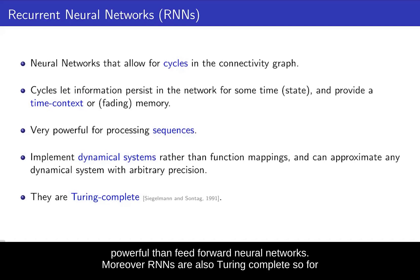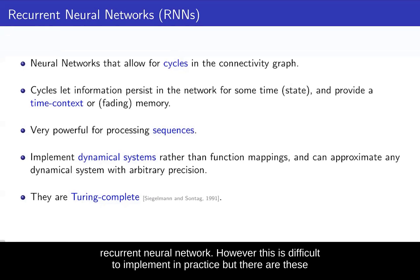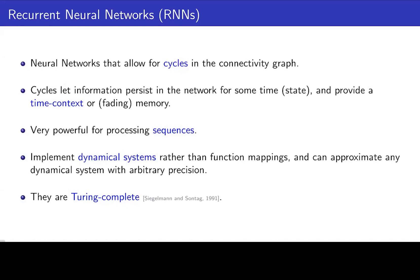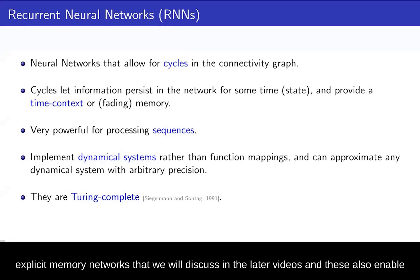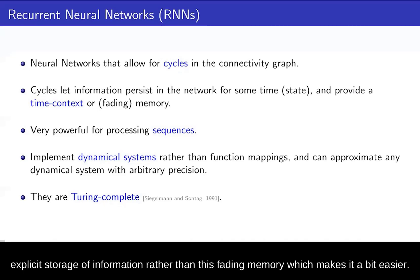Moreover, RNNs are also Turing complete. So for any operation that you can perform with a Turing machine, you can in theory simulate it with a recurrent neural network. However, this is difficult to implement in practice, but there are explicit memory networks that we will discuss in later videos. These enable explicit storage of information rather than this fading memory, which makes it a bit easier.